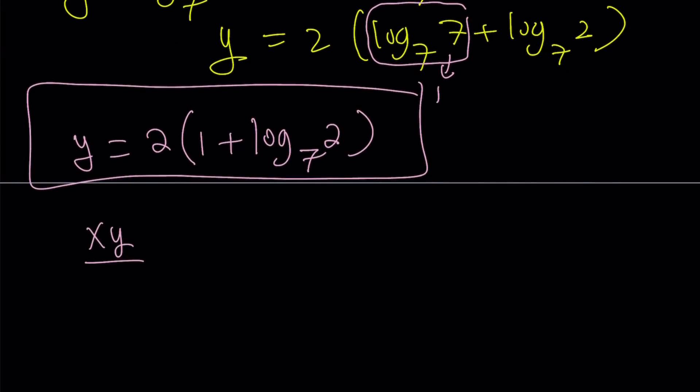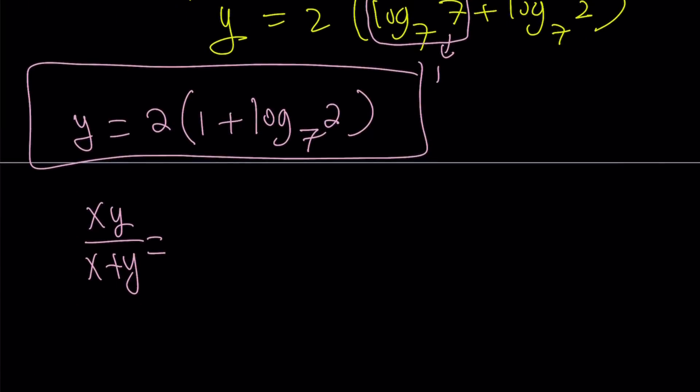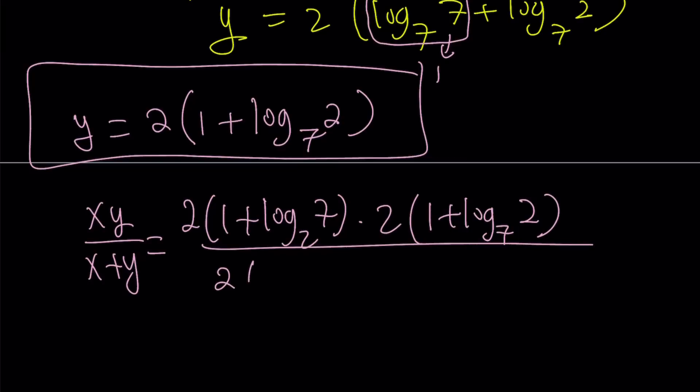xy over x plus y. Now what is x? What is y? Let's go ahead and plug it in. x is 2 times 1 plus log 7 base 2. And y is 2 times 1 plus log 2 base 7. And then at the bottom, we're just going to add them. So like this plus this. Okay. I'm going to simplify this next.